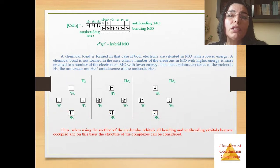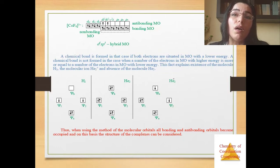A chemical bond is formed in that case if both electrons are situated in molecular orbital with lower energy. A chemical bond is not formed in a case when a number of electrons in molecular orbital with higher energy is more or equal to a number of electrons in molecular orbital with lower energy. This fact explains existence of the hydrogen molecule, the molecular ion helium, and absence of the helium molecule. You see from these pictures.